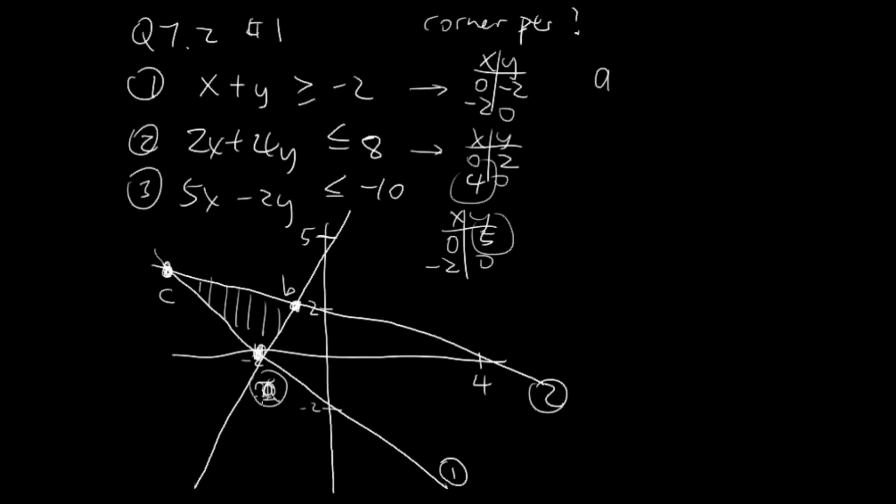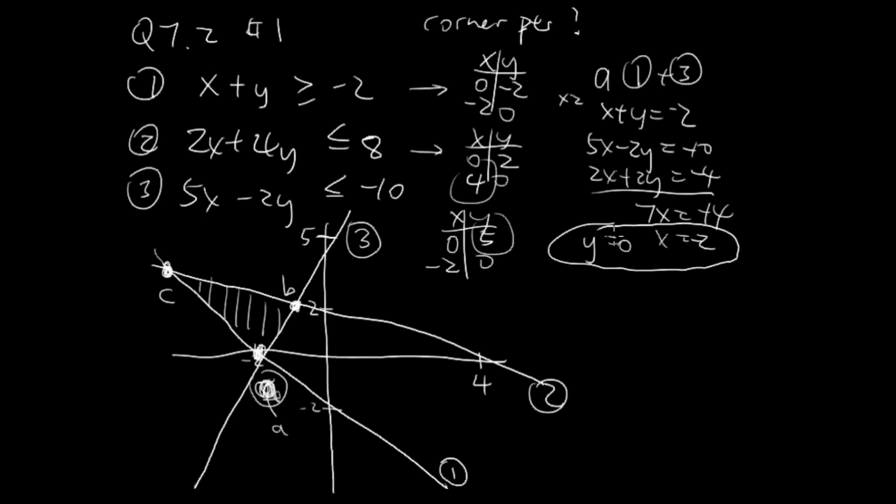Point A comes from line 1 and line 3, so I solve for line 1 and line 3. Here we have x plus y equals negative 2, and 5x minus 2y equals negative 10. I'll multiply the first equation by 2. We have 2x plus 2y equals negative 4. Add these two, we have 7x equals negative 14, so x is negative 2. And naturally y is 0, since negative 2 plus 0 equals negative 2. So negative 2 and 0 for point A.